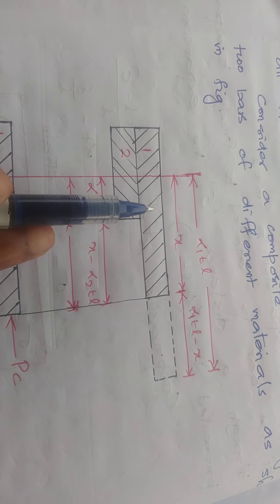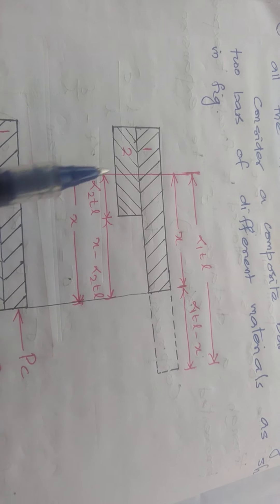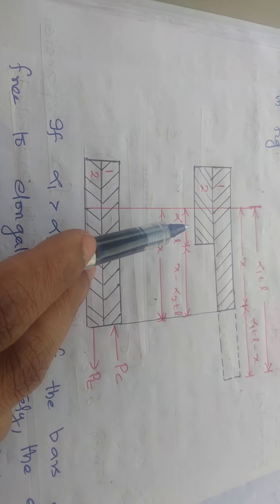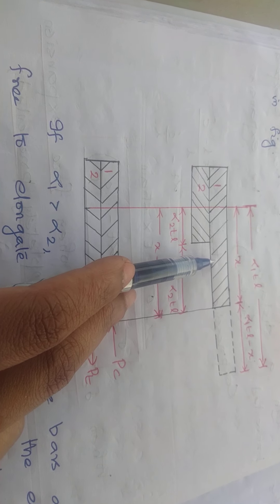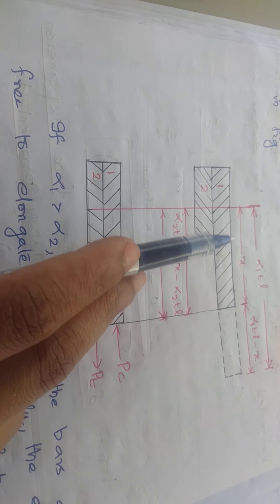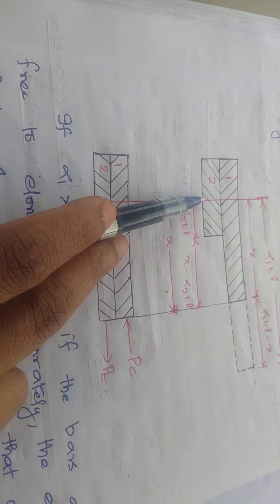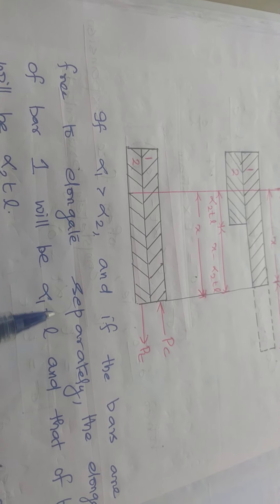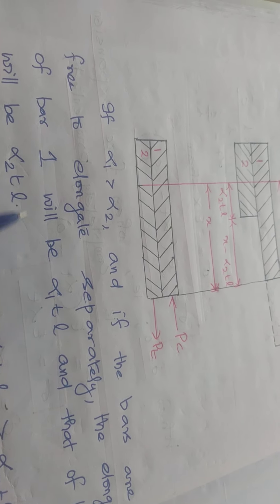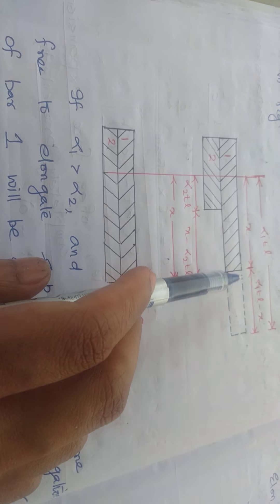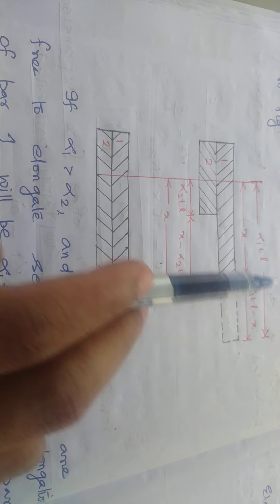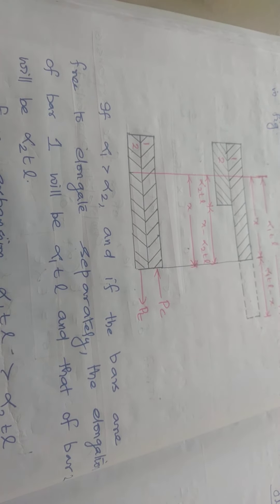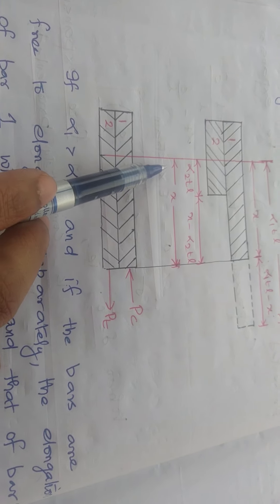There are two materials — material 1 and material 2. If alpha 1 is greater than alpha 2, that is, the coefficient of linear expansion of material 1 is greater than that of material 2, and if the bars are free to elongate separately, the elongation of bar 1 will be equal to alpha 1 × T × L and the elongation of bar 2 will be equal to alpha 2 × T × L.